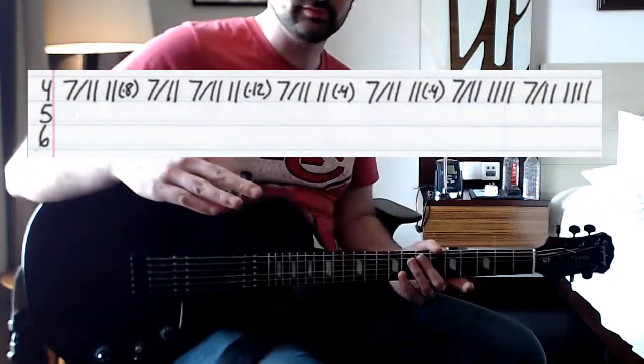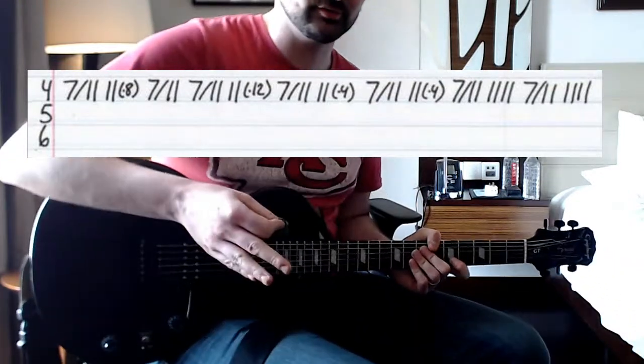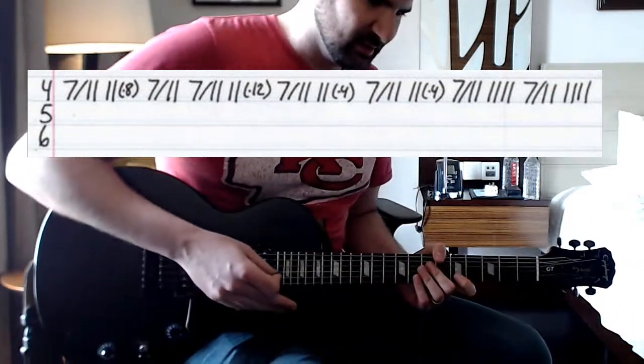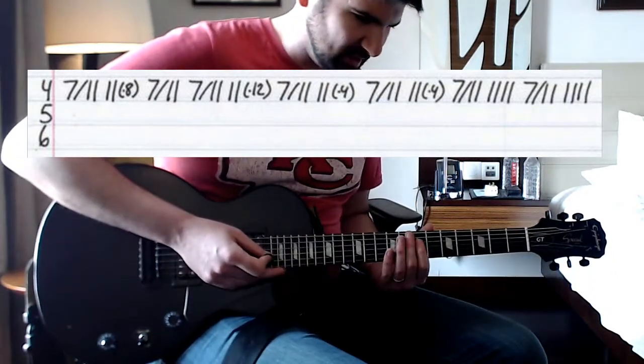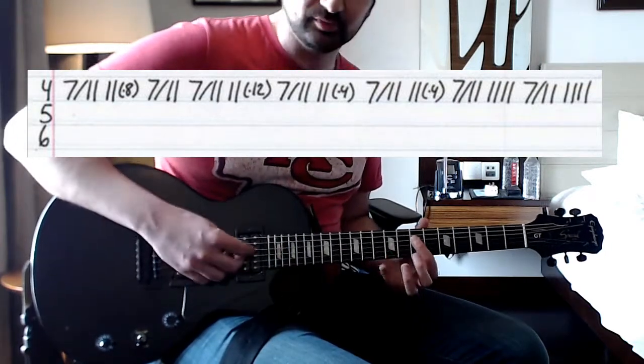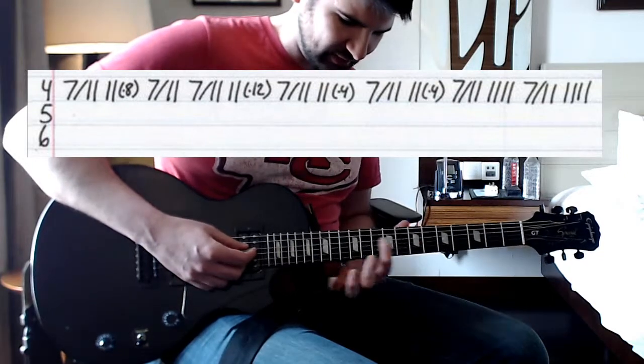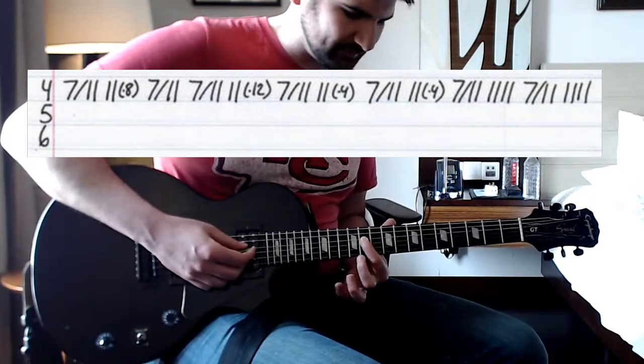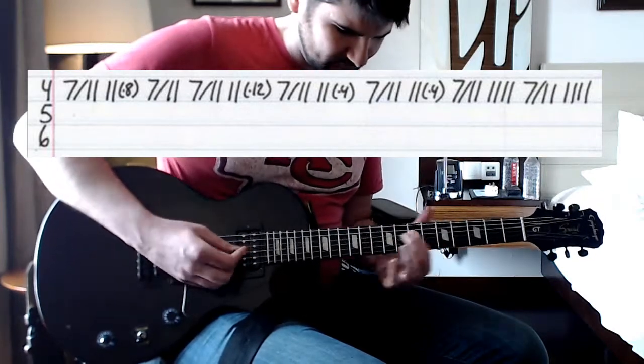And this next riff, this isn't actually the guitar playing, at least I don't believe it is. It sounds like it's some sort of digital effect being played. But I like playing a little guitar riff over it. It's kind of fun just doing from the 7th fret on your D string, and then sliding up to the 11th fret on the D string. I think it just sounds kind of cool.